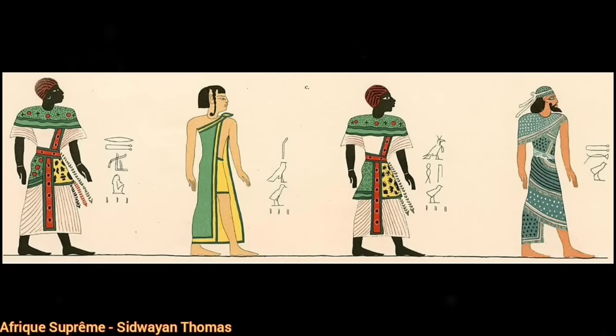Nous allons commencer avec cette image, car elle est l'une des toutes premières images à avoir été falsifiée par les Arabes et les Européens. Cette image est ce qu'on appelle la table des nations, c'est-à-dire la manière dont les anciens égyptiens vont se représenter. Cette table des nations fut retrouvée dans la tombe du plus grand pharaon de l'Égypte ancienne, qui s'appelait Massiré II, mais que les égyptologues européens appellent Ramsès II. Nous allons l'utiliser comme référence afin de mettre à jour la falsification de l'Égypte ancienne.